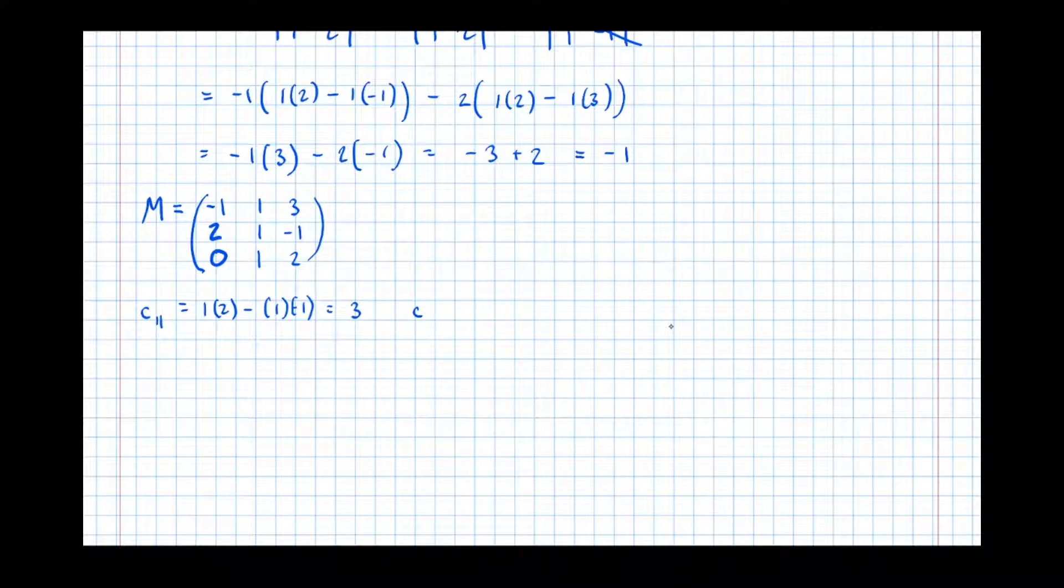And its cofactor is found by finding the matrix of the remaining items. So C₁,₁, and I call it 1,1 because the first row and first column, equals 1 times 2, take 1 times -1, which is equal to 3. The next cofactor, going vertically, so C₂,₁, second row, first column equals, so we delete the row and column. The determinant of the remaining items is 1 times 2, take 1 times 3, equals -1. And C₃,₁ equals the determinant of 1 times -1, take 1 times 3. -1 take 3 is -4.